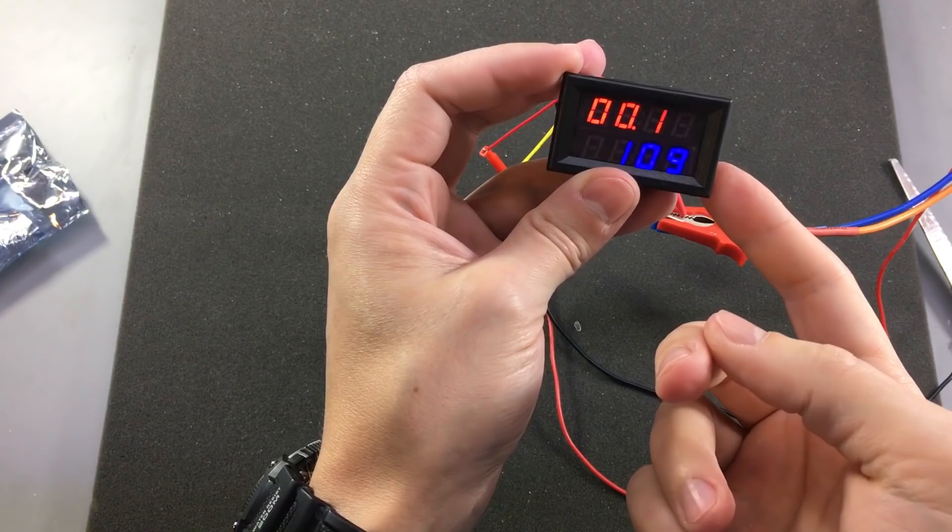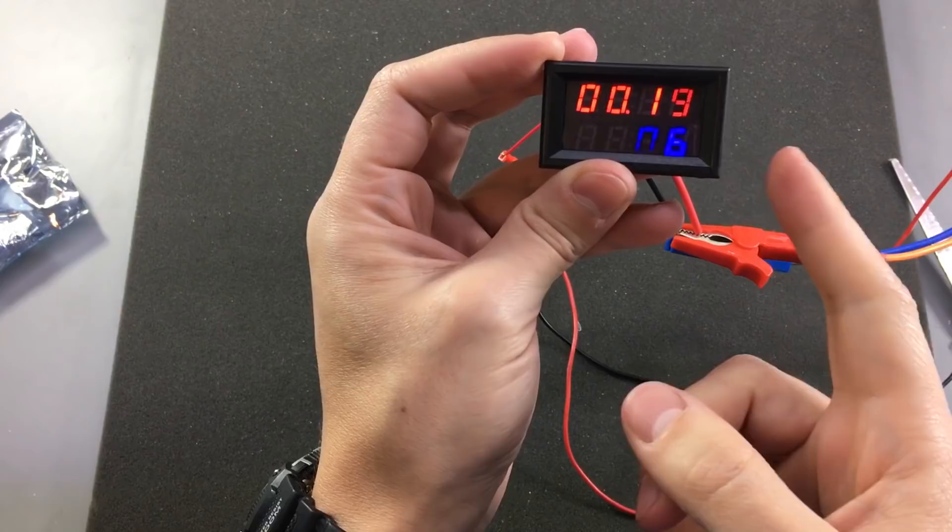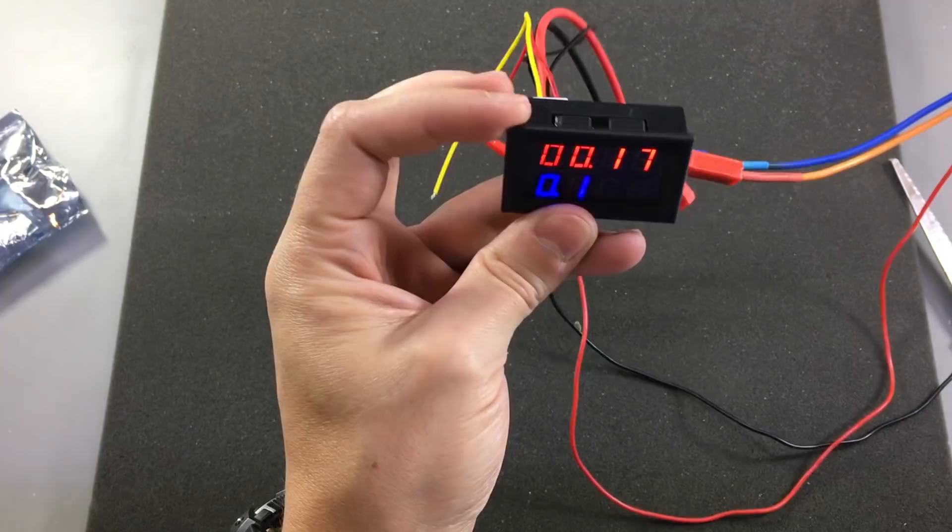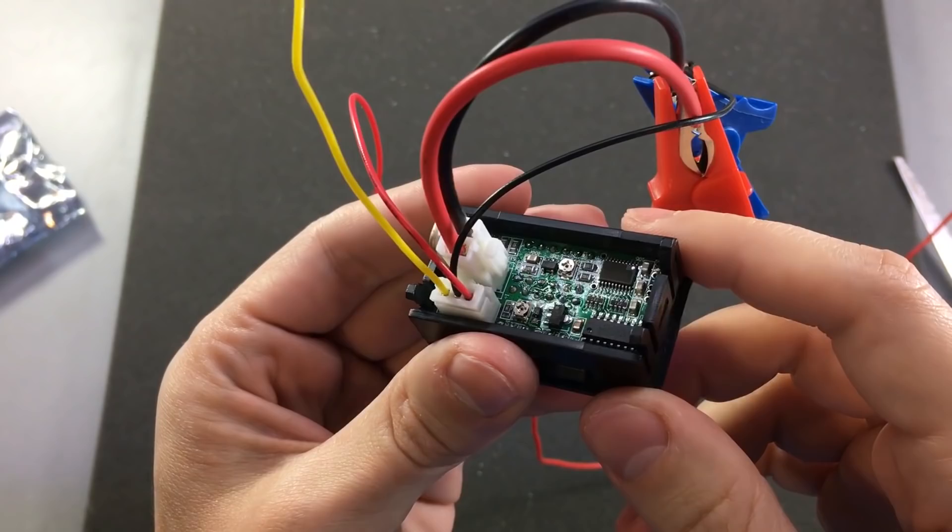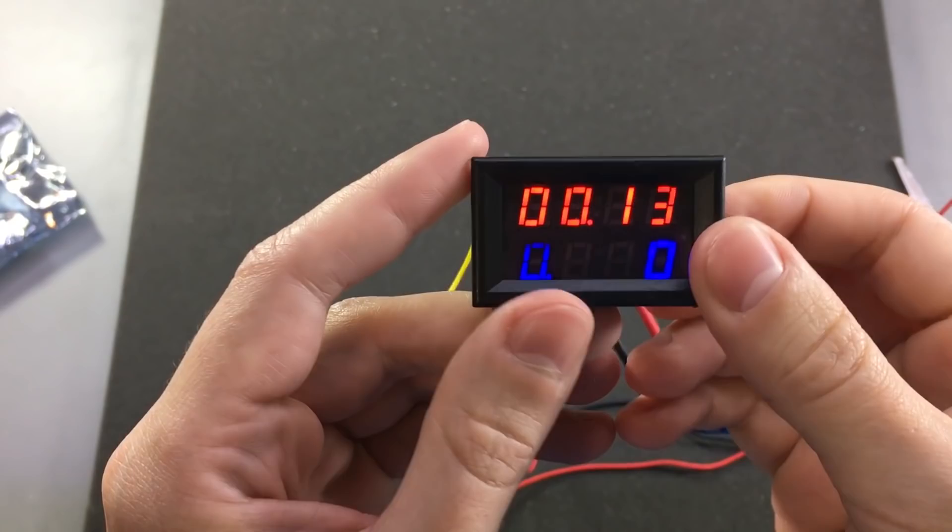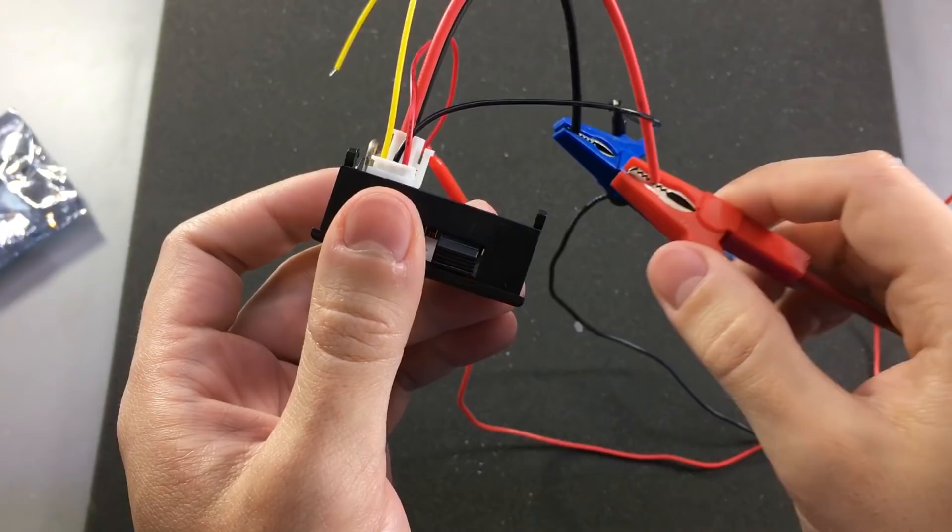In fact, I might do a follow up video on this for checking its accuracy. Yep, a great panel meter so far. But it also depends on the accuracy and if we can calibrate it or not. I do see a couple of adjustment pots on the back. So it might be possible to calibrate both the voltage and the current display.